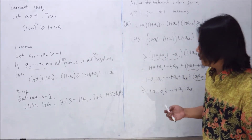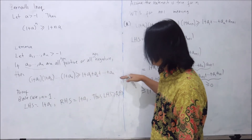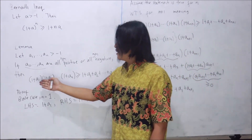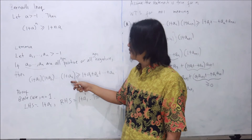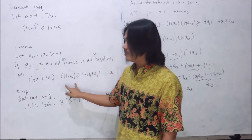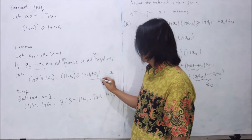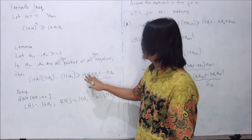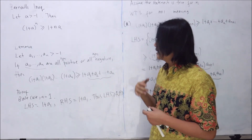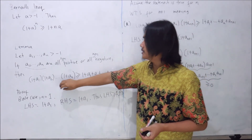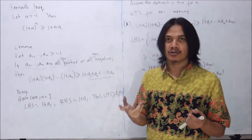Now we can easily see how the Bernoulli inequality follows from this lemma. We simply take a1, a2, up to an to all be the same number a. Then each factor (1+ai) is the same, giving (1+a)^n on the left, and the sum a1+a2+···+an becomes na on the right. So the lemma directly implies (1+a)^n ≥ 1 + na, which is exactly the Bernoulli inequality.